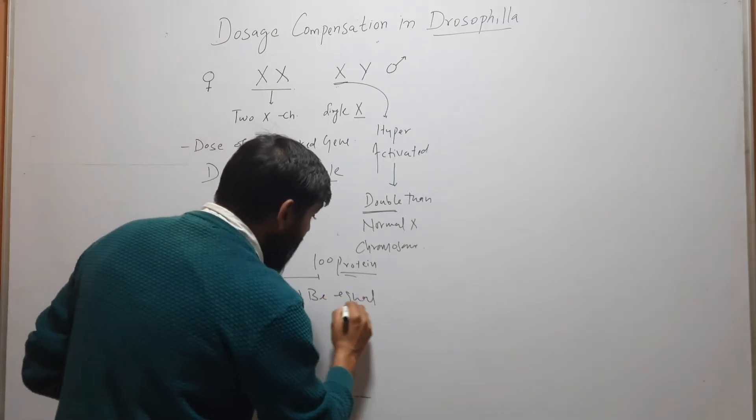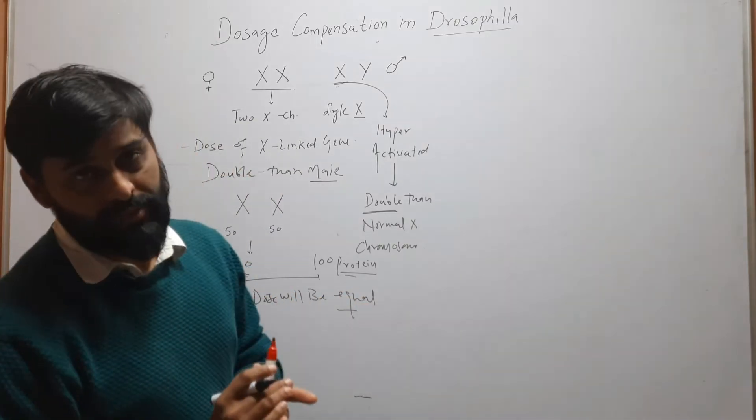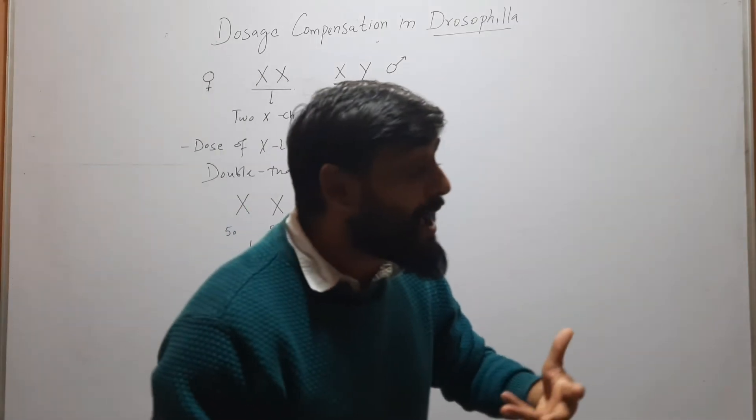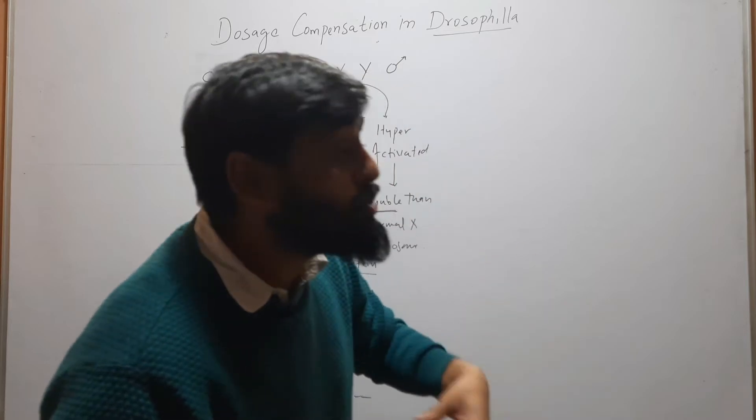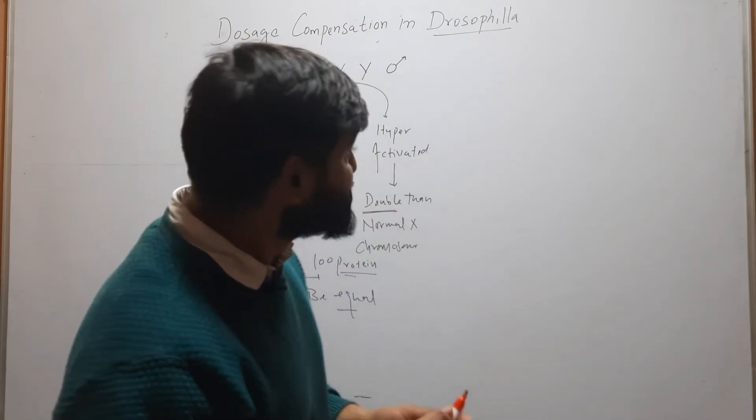So this X chromosome dosage is equalized. But how is this achieved? How is this X chromosome hyperactivated?